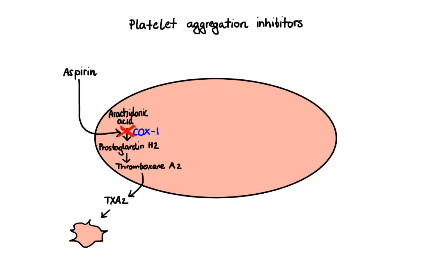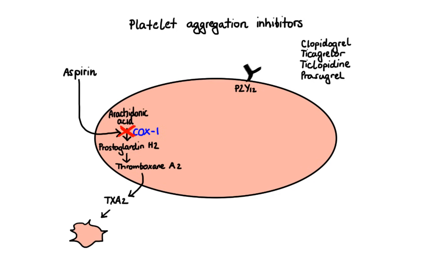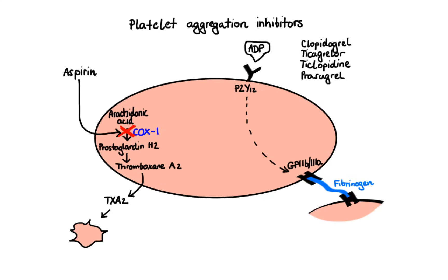Next, we have platelet aggregation inhibitors that work by blocking the action of the ADP receptor, specifically the P2Y12 subtype. Drugs that belong to this group include clopidogrel, ticagrelor, ticlopidine, and prasugrel. Activated platelets release ADP, which binds to the P2Y12 receptor, leading to activation of the glycoprotein 2b3a receptors required for fibrin-mediated platelet cross-linking. By blocking P2Y12 ADP receptors, these drugs effectively inhibit platelet aggregation and thus clot formation.